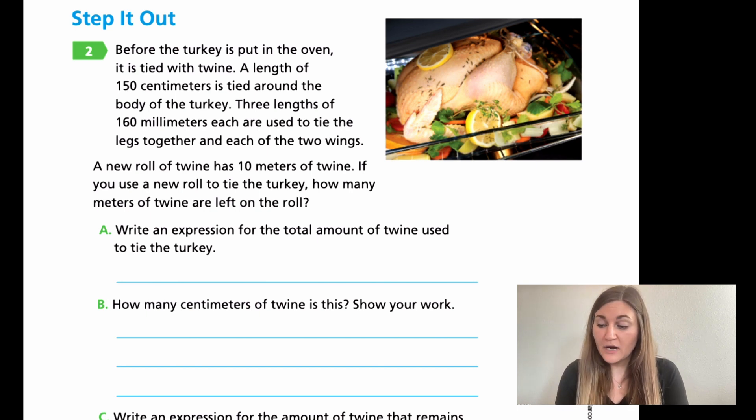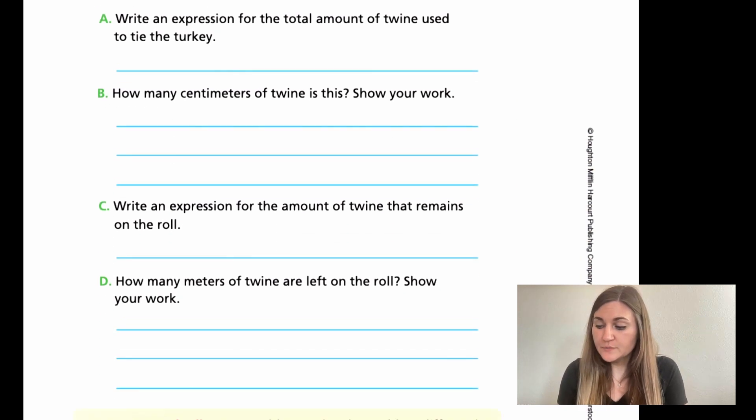So for A, it says write an expression for the total amount of twine used to tie the turkey. So don't convert yet. Just write me an equation of the four different lengths that you're going to be using in their original units. Then for B, how many centimeters of twine is this? This is where you're converting everything into centimeters. And remember powers of 10 for metric system. C, write an expression for the amount of twine that remains on the roll. So out of the centimeters, how much is left? Remember, keep it in two individual measurements. Just write me an equation of what that'll look like originally. Then for D, how many meters of twine are left on the roll? So now you're putting everything into meters. And then just make sure you show your work. Go ahead and try your best on these four questions and then come back and we'll solve them together. Go ahead and hit pause here.